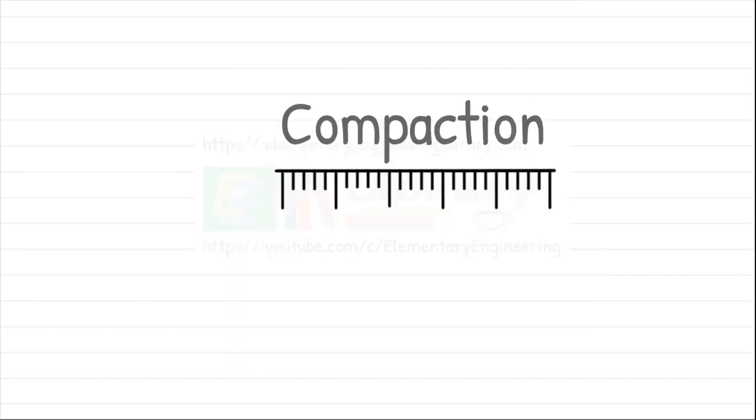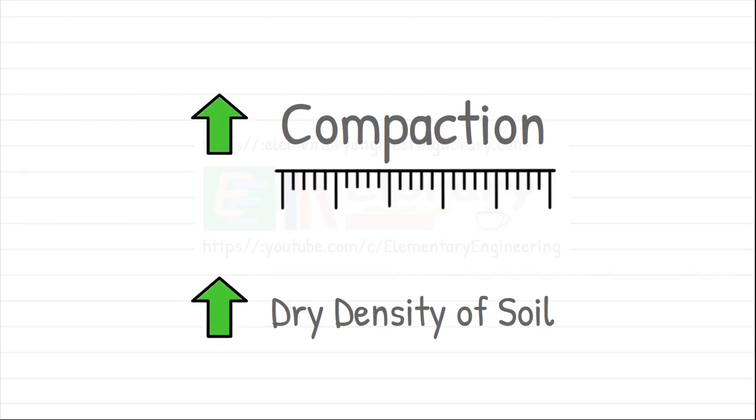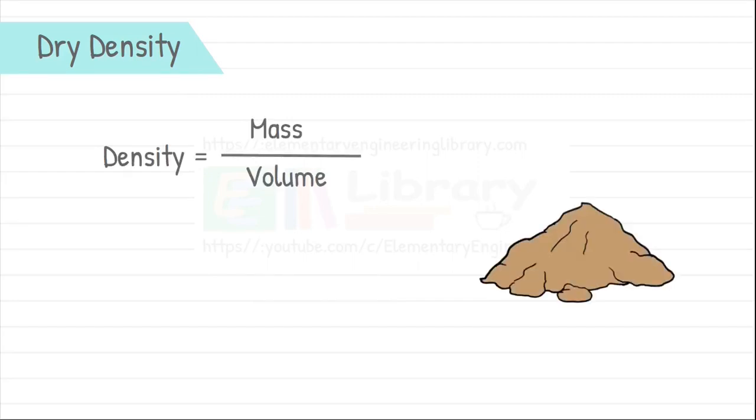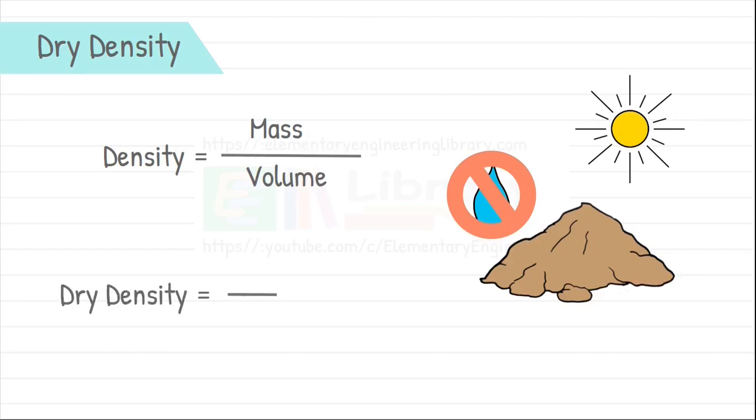Compaction is measured by dry density of soil. Higher the density, higher is the compaction. Dry density of soil is nothing but density of soil when it is in completely dry state which means no water is present in its pores. So the dry density of soil is mass of soil solids only divided by its volume.